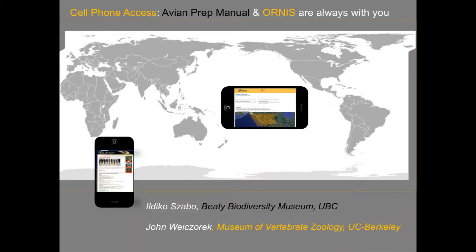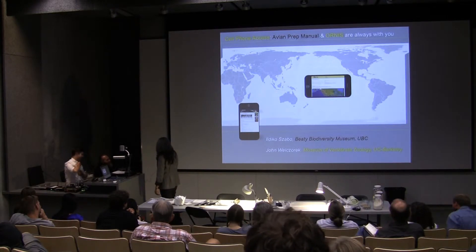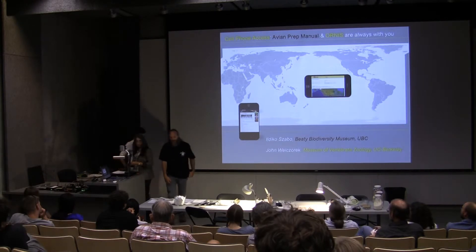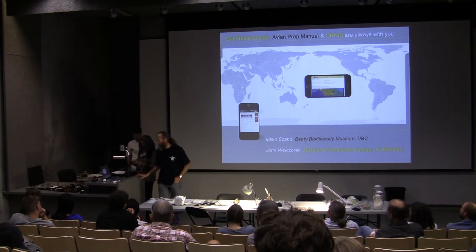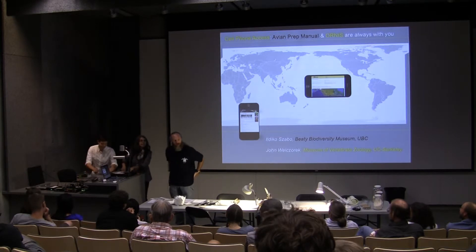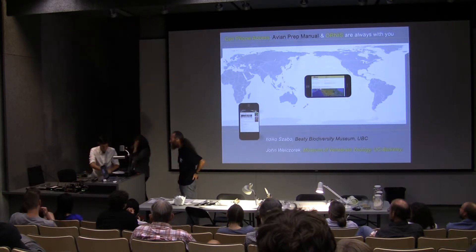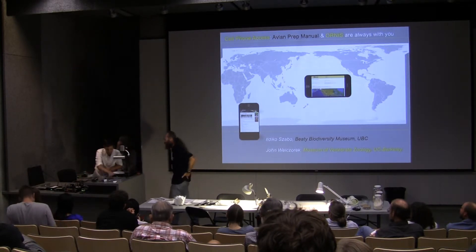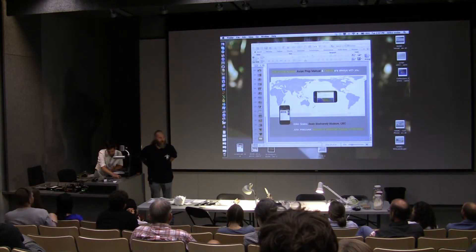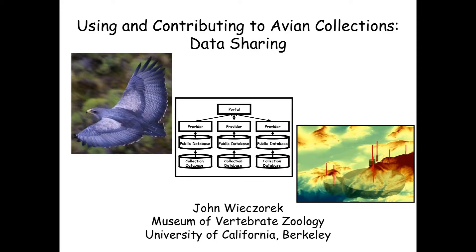Gynandromorph is in the list of possible sex values in Darwin Core. However, controlled vocabularies are not well managed these days. We're more worried about getting data published than we are about the content of the data at this point — but that is changing.